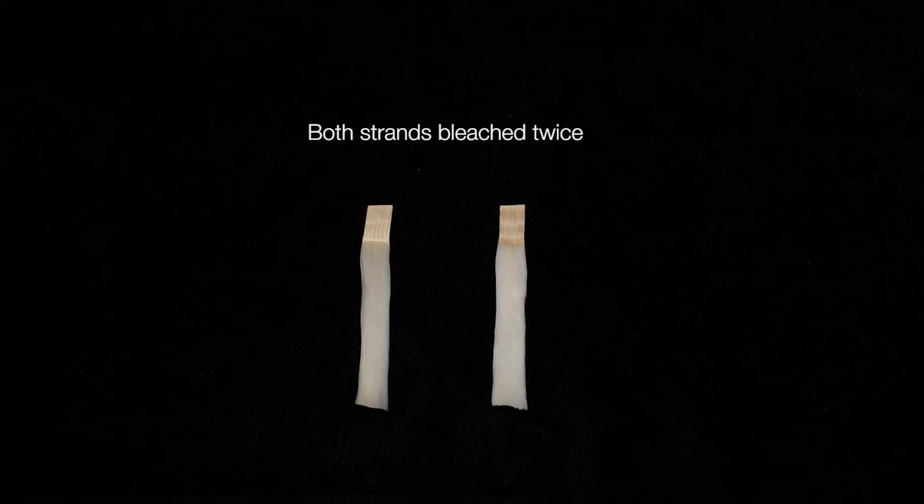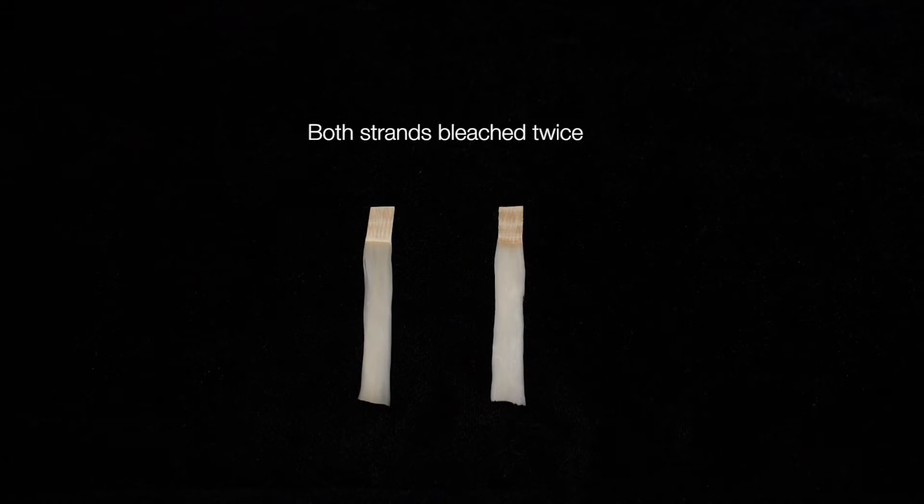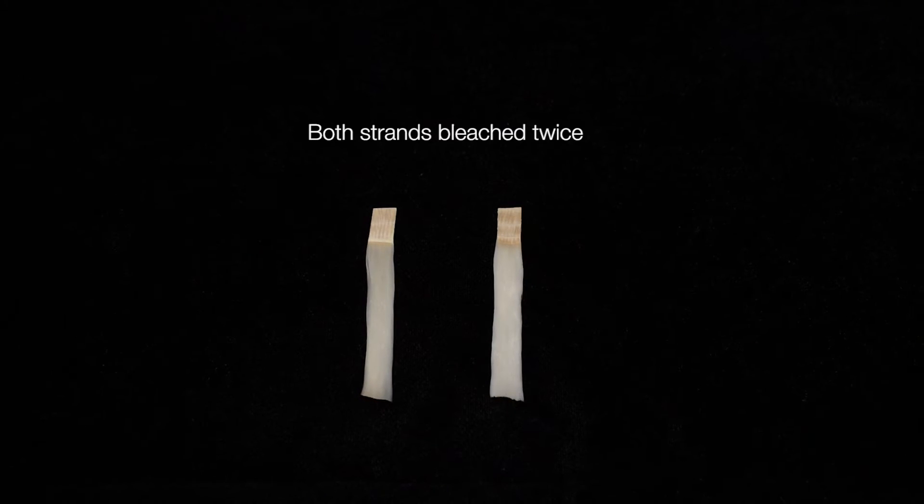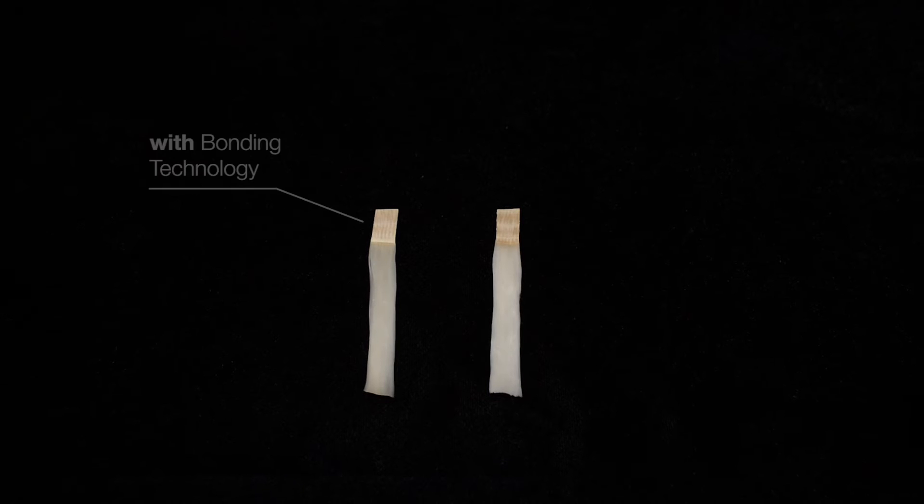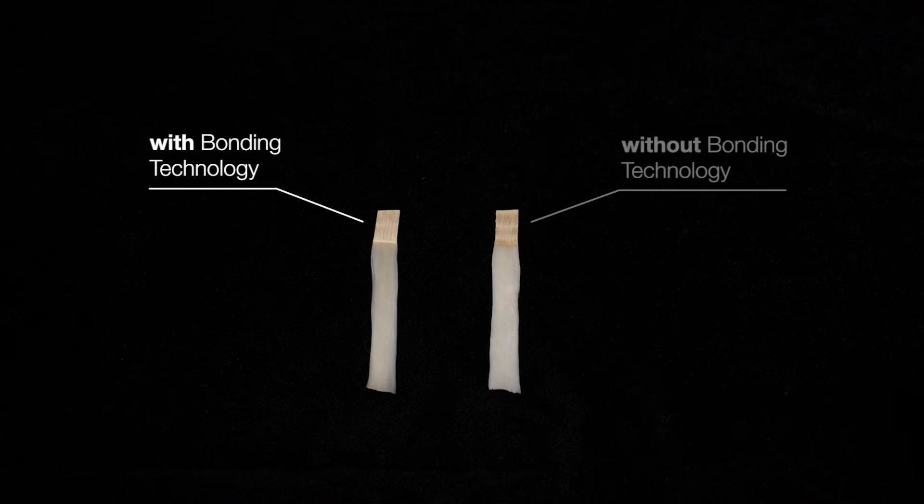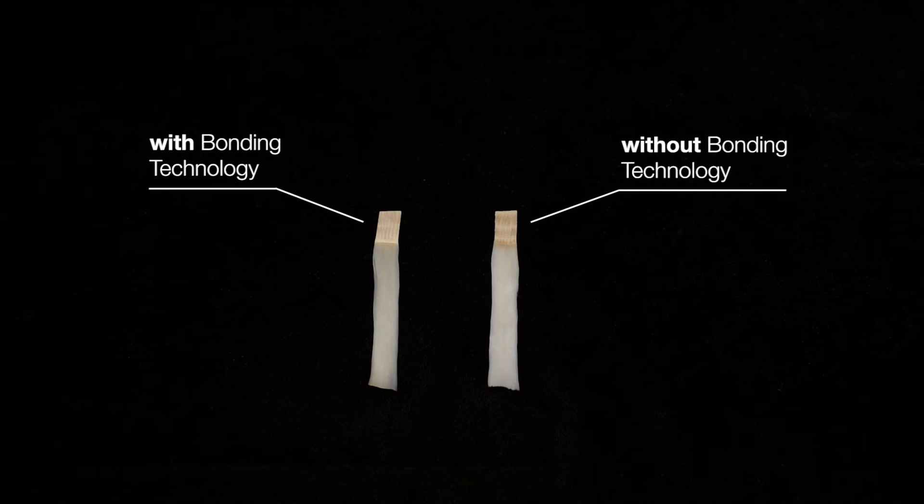You can see here two hair strands which had been bleached twice so they are over processed. The strand on the left side was protected and treated with the Schwarzkopf Professional bonding technology.